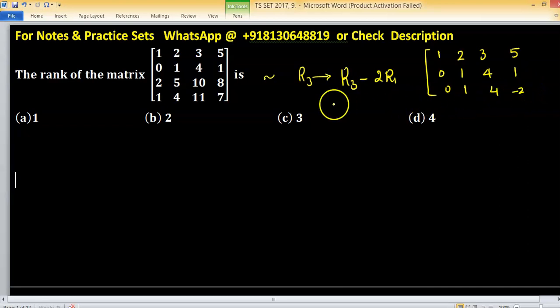And last row you can apply R4 as R4 minus R1. So last row will be 0, 2, 8, 2.